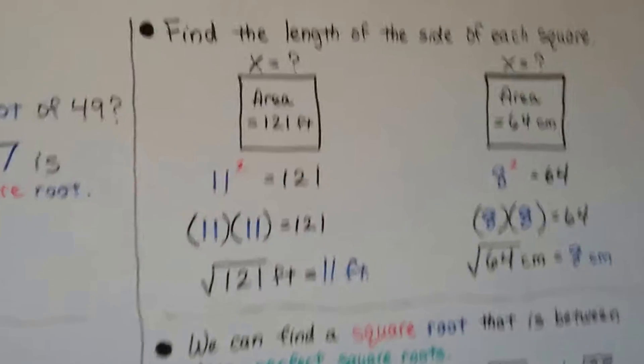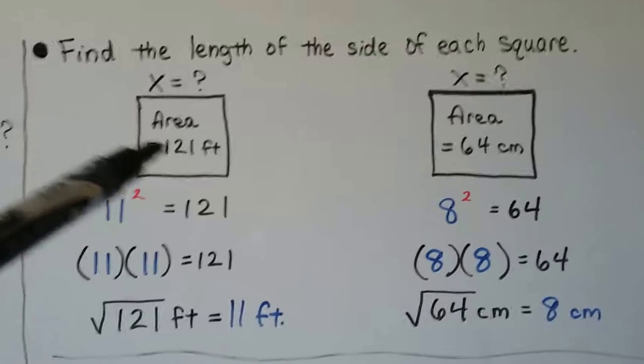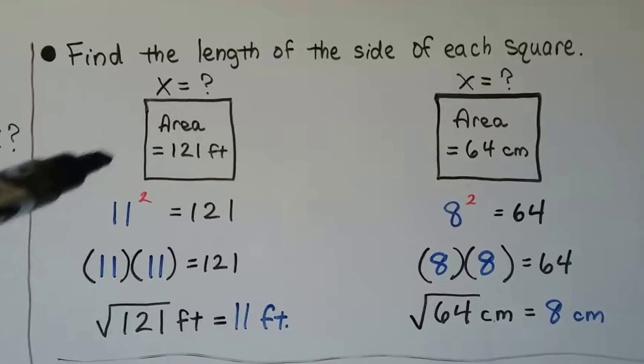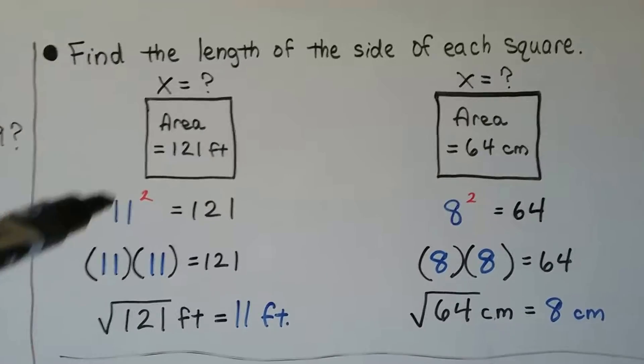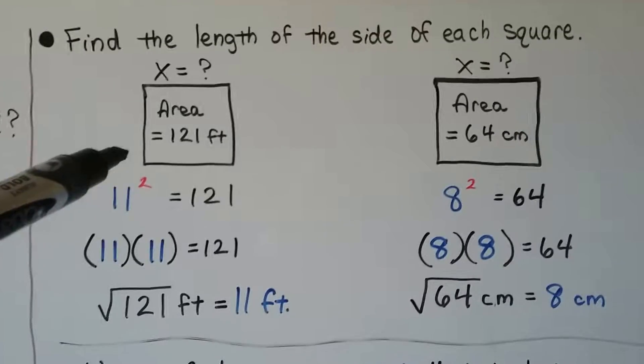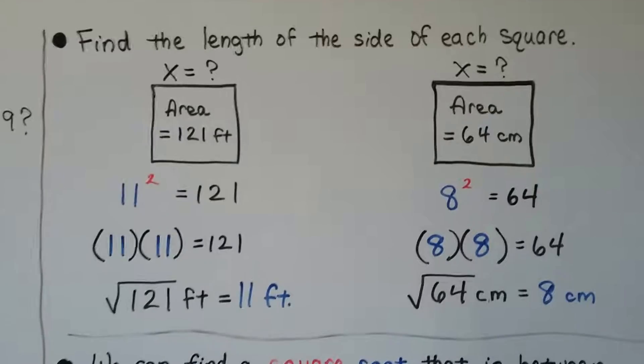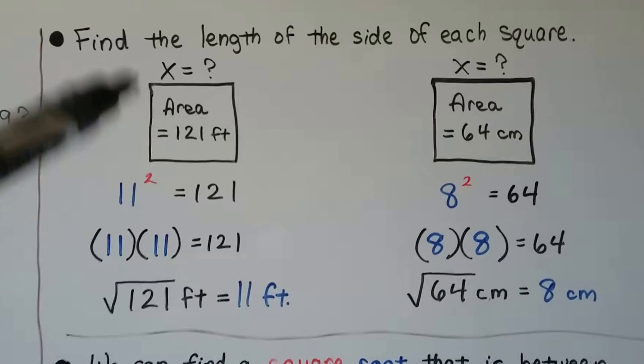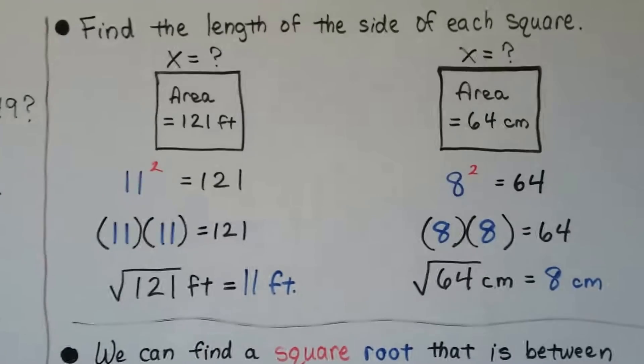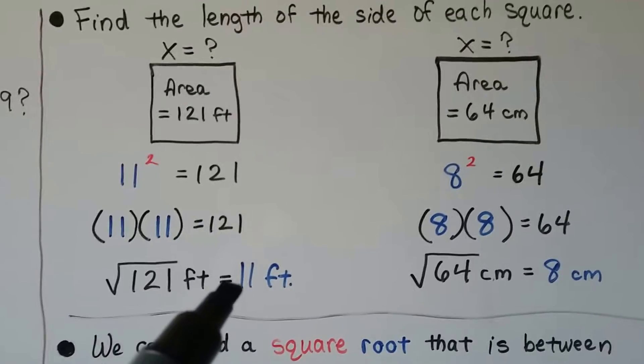And, it says to find the length of the side of each square, the area inside of this square is 121 feet. It's 121 square feet. What number can we multiply to itself that will equal 121? 11. That means it's 11 feet on one side. Because all the sides are equal. It's a square. That's the definition of a square. All the sides are equal. So, we only need the measure of one side. And, when we multiply 11 times 11, we get 121. That means the square root of 121 feet is 11 feet.